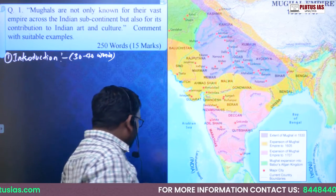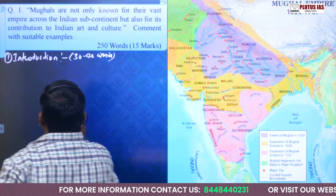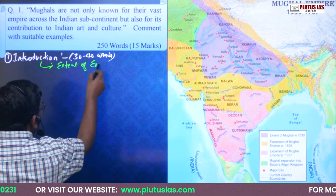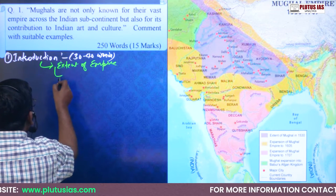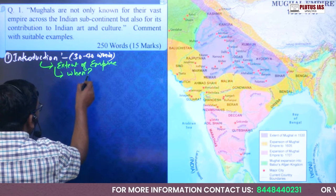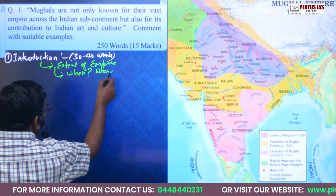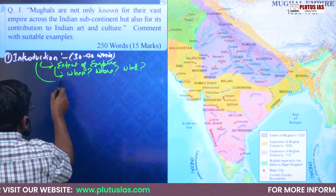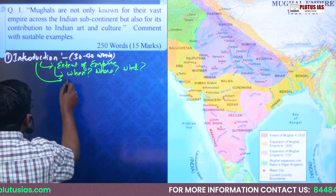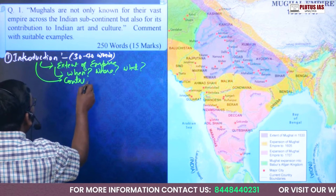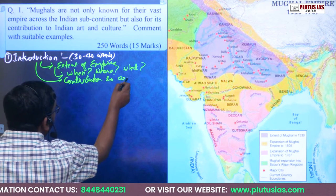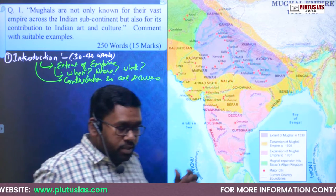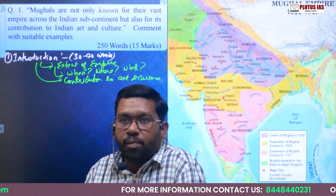In the introduction, we will focus on the following points: first, the extent of the Mughal Empire; second, when it was founded and where it was established; and third, its time period. The third aspect will be the contribution to Art and Culture. So these three aspects will be written in the introductory lines of this topic.